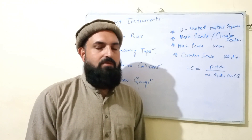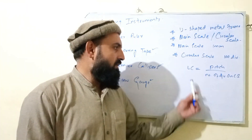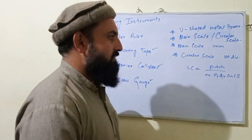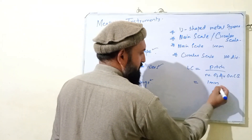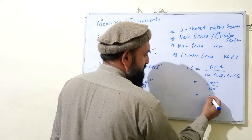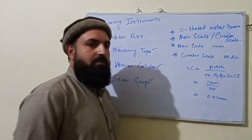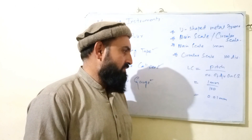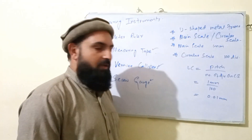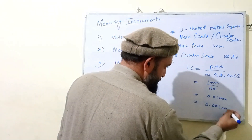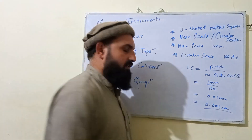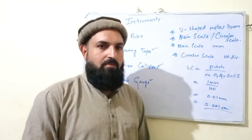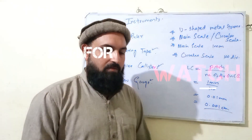The circular scale has 100 divisions. The least count is calculated by dividing 1 mm by 100 divisions, giving a least count of 0.01 mm. So we can do an accurate measurement of 0.01 mm with the micrometer screw gauge. Thanks for watching.